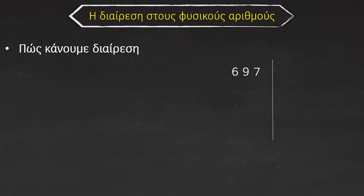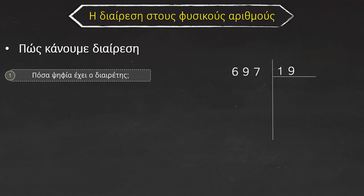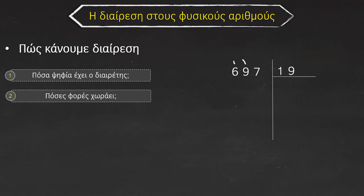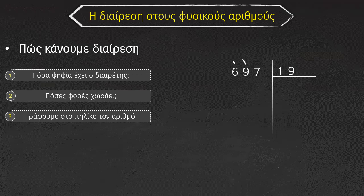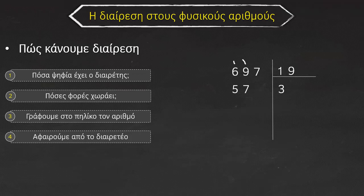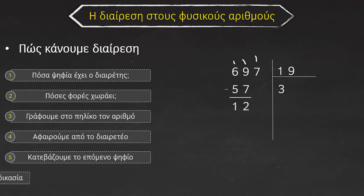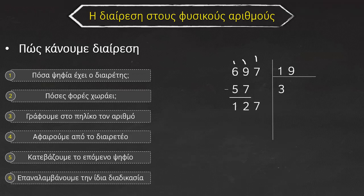Πώς κάνουμε διαίρεση. Έχω τον φυσικό αριθμό 697 και θέλω να τον διαιρέσω με το 19. Πόσα ψηφία χωράει ο διαιρέτης; Δύο ψηφία έχω στο διαιρέτη, δύο τονίζω και στον διαιρετέο. Στη συνέχεια βλέπω πόσες φορές χωράει. Το 19 χωράει στο 69, 3 φορές και το γράφω στο πηλίκο. 3 φορές το 19 μου κάνει 57 και στη συνέχεια αφαιρούμε από τον διαιρετέο. Κάνω την αφαίρεση και έχω υπόλοιπο 12. Στη συνέχεια κατεβάζω το επόμενο ψηφίο, το τονίζω και αυτό, το 7. Κατεβάζω και επαναλαμβάνω την ίδια διαδικασία. Το 19 πόσες φορές χωράει στο 127; Χωράει 6 φορές. 6 φορές το 19 μου κάνει 114. Αφαιρώ και έχω υπόλοιπο 13.